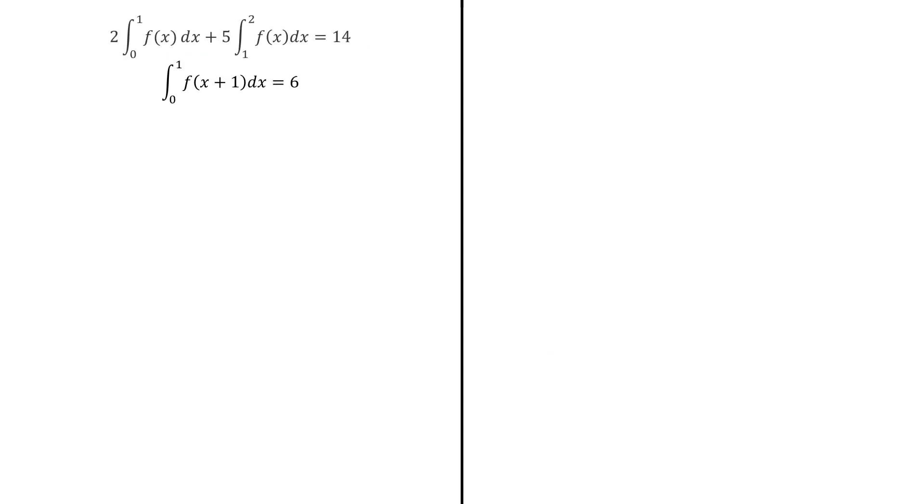We're given those two conditions and would like to find the integral from 0 to 2 of f(x) dx. Now, we just have to split this integral into two integrals from 0 to 1 and from 1 to 2. Now, given this condition, if one of these integrals is known, we can then deduce the value of the other one.